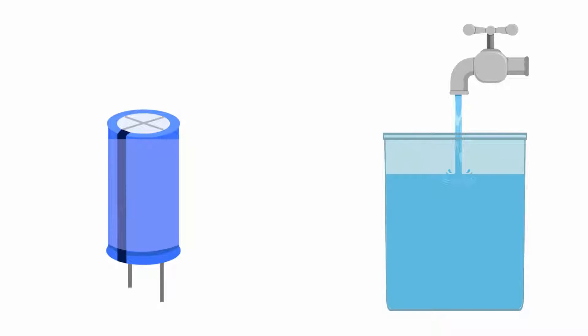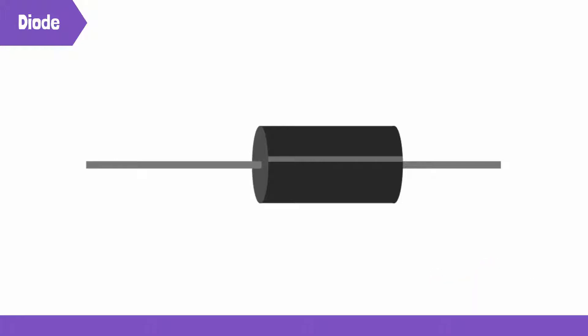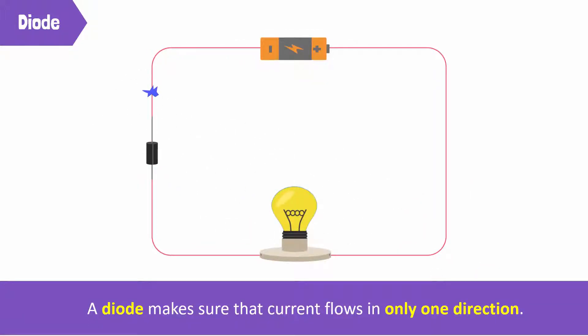What else do we have here? This one? This is a diode. It makes sure that current flows only in one direction.